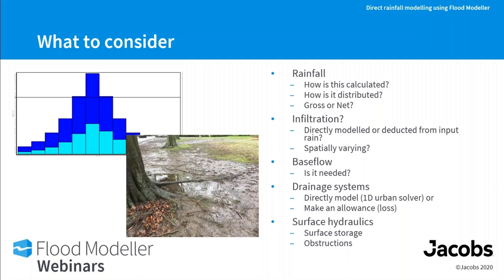Surface hydraulics are very important. You need to consider surface storage — depressional storage around trees in forested areas can provide significant attenuation. In urban areas there are obstructions: walls, buildings, roads, railway and road embankments all change flow paths. You also need to capture routes around obstructions, such as culverts under embankments. There is quite a lot to consider — a lot of data to collect — and you need to decide which elements are relevant to your study.